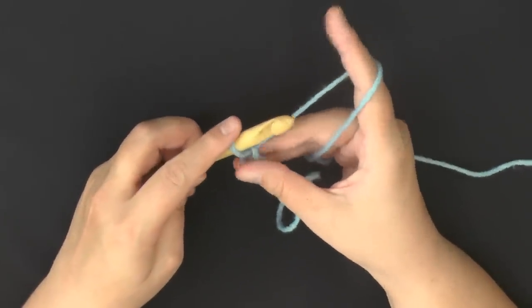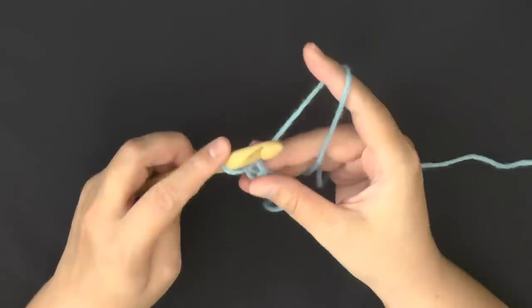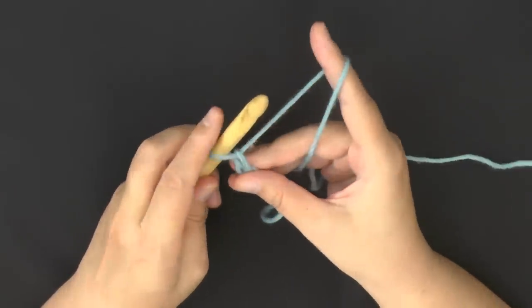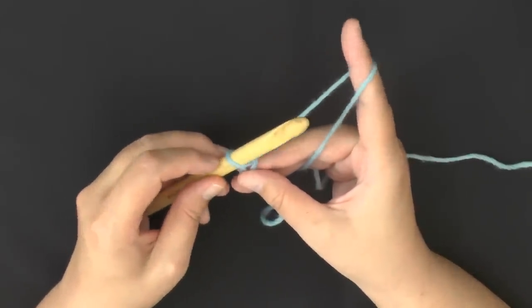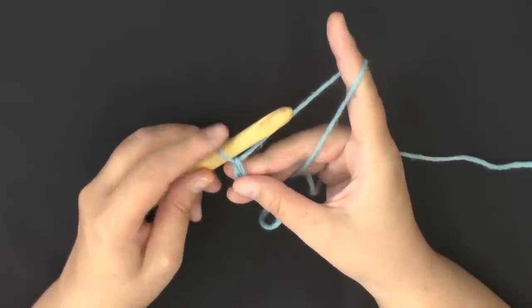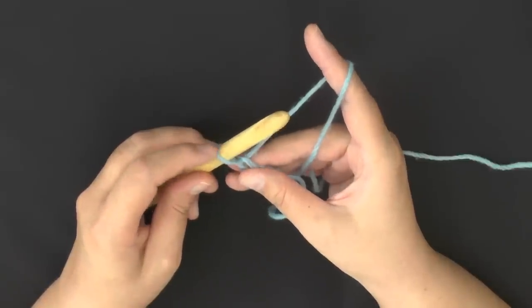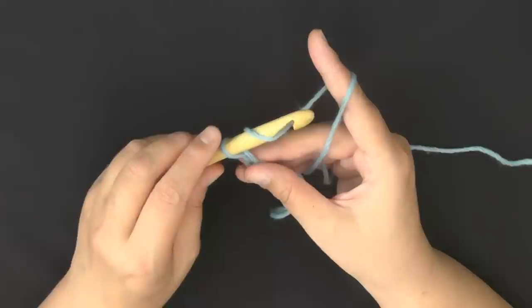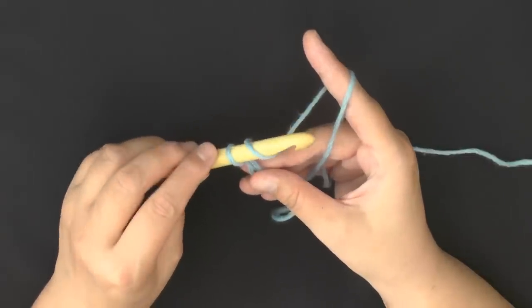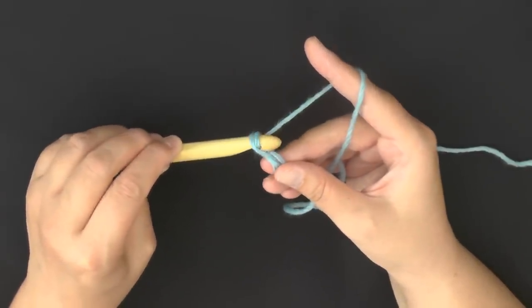So basically the art of crochet is learning how to hold your yarn, giving yourself enough space here and keeping your loop from getting too big or too small, so you're controlling your loop size here, and of course the art of twisting your hook down to pull through that loop.